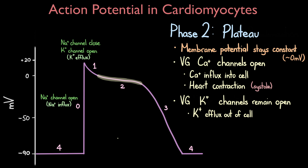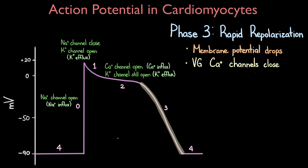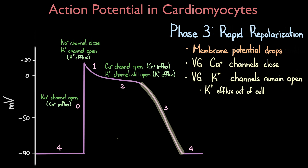This plateau phase is responsible for the large duration of the action potential and is important in preventing irregular heartbeats. Phase three is the rapid repolarization phase. The membrane potential drops rapidly during this phase. After the myocyte has contracted, the calcium channels close while the potassium channels remain open to continue allowing potassium to exit the cell. This means there is a loss of positively charged ions, which results in a negative change in the membrane potential, and thus the cell repolarizes.